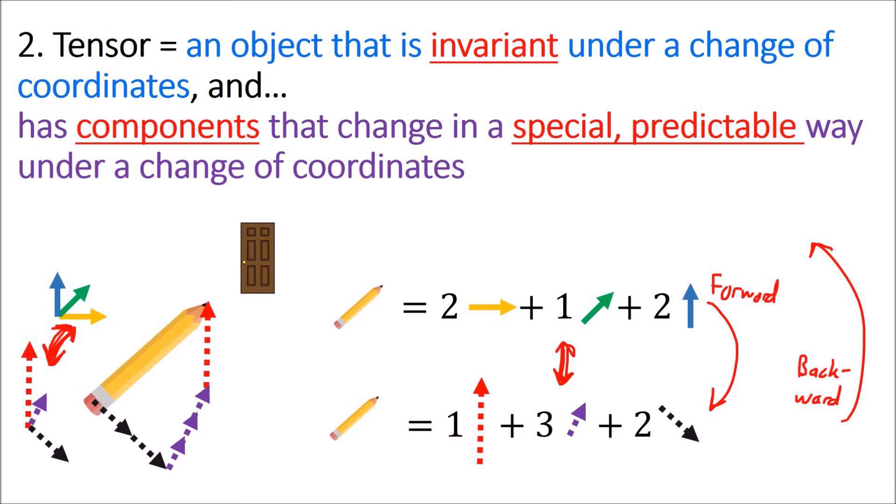So backing up, what a tensor is, a tensor is an object that is invariant. It doesn't depend on the coordinate system, but its components, which do depend on the coordinate system, change in some special predictable way that we can figure out using these forward and backward transformations. And this is what I'm going to call the coordinate definition of a tensor.